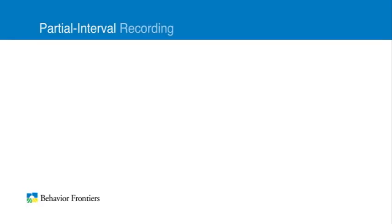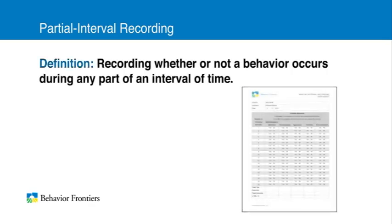A third way to record data on problem behaviors is to use partial interval recording. This is a time sampling procedure that can be defined as recording whether or not a behavior occurs during any part of an interval of time.